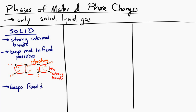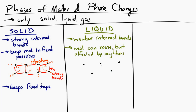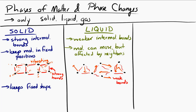For a liquid, there are weaker intermolecular bonds. The molecules can move around, but they're still very strongly affected by the forces caused by nearby molecules. The location of each molecule is constantly changing, but they're still strongly affected by those neighbors. From a macroscopic perspective, a liquid will fill the volume of whatever container it is in, but its shape is not fixed like a solid.